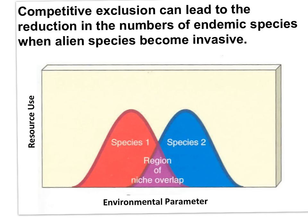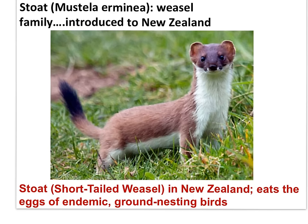Alien species become invasive as a result of competitive exclusion, which leads to the reduction in the numbers of endemic species. New Zealand has a high proportion of ground-nesting and flightless birds due to long geographical isolation and a natural lack of mammalian predators. However, in recent years, bird species in New Zealand have declined because of the stoat, an alien species that has become invasive. The stoat, a member of the weasel family, was introduced to New Zealand in the 1880s to control rabbits and hares. Stoats are now considered public enemy number one for New Zealand birds, most of which are endemic.